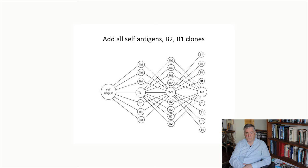We now add to this network B2 and B1 clones. B2 clones are clones that make IgG and B1 clones are clones that make IgM. And we're taking into account in this model all of the self-antigens. So all of the self-antigens stimulate TH1 and TS1 clones, which are anti-self.